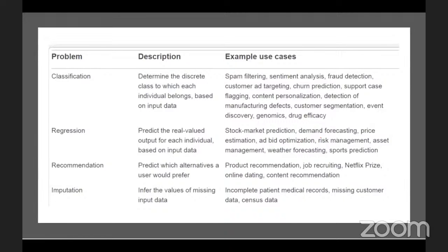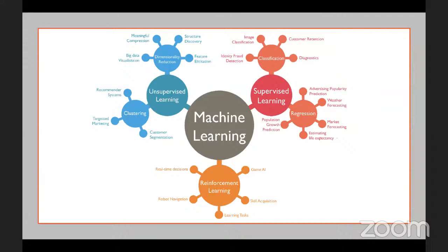Imputation is another problem type: if you have insufficient data, how can you increase data points using machine learning techniques? You classify the problem type — whether it's a supervised, unsupervised, or reinforcement learning problem — and then accordingly employ different machine learning algorithms. Based on the category and the problem type, you decide which algorithm can be applied.